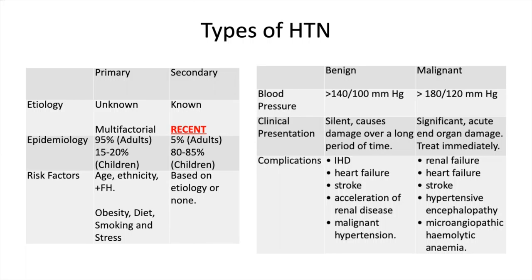To classify hypertension, we categorize it based on etiology and clinical manifestation. Primary hypertension is caused by an idiopathic multifactorial mechanism. One theory suggests it is caused by age-related deterioration of the medial layer, leading to decreased compliance and higher pressure. About 95% of hypertension cases in adults are primary, whereas only 15 to 20% in children are, further supporting that theory. Risk factors are divided into non-modifiable — age, ethnicity, and positive family history — and modifiable — obesity, diet, smoking, and stress.